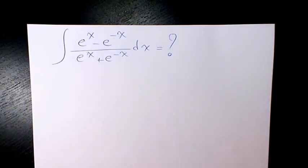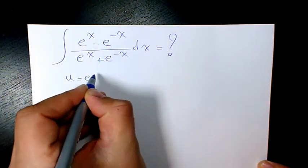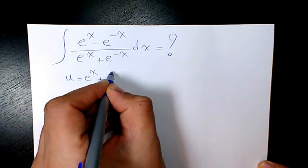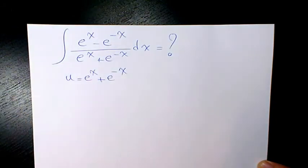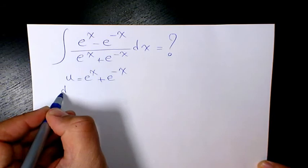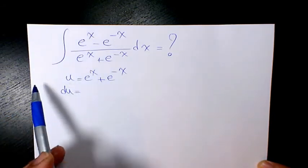So if I have u as e to the power of x plus e to the power of negative x, if you find out the derivative of both sides, on the left hand side will be du.